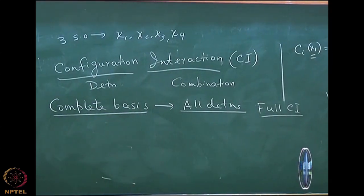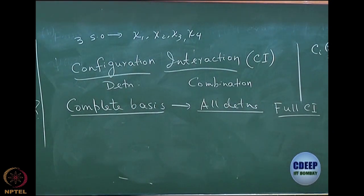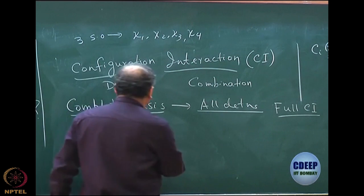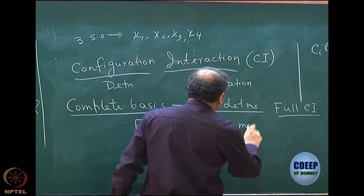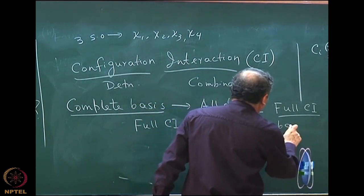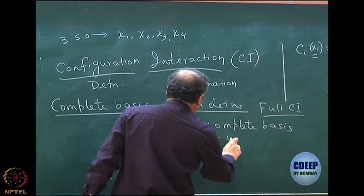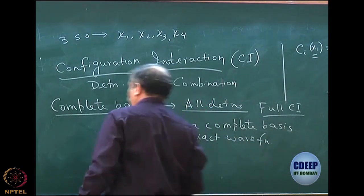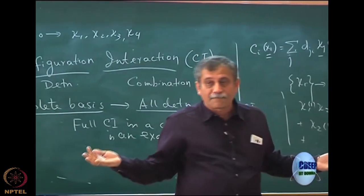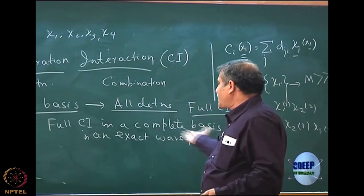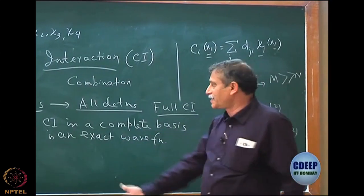Full CI means you have taken all possible determinants in a complete basis. Full CI in a complete basis is exact — I repeat: full CI in a complete basis is exact. This is an exact wave function because there is no more error. However, a complete basis can never be achieved because it is infinite. So this is really a statement with no practical relevance since we cannot solve an infinite-dimensional problem.